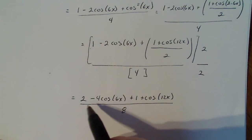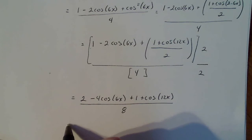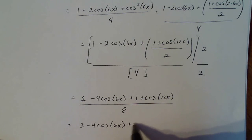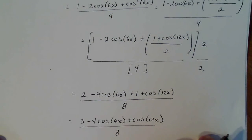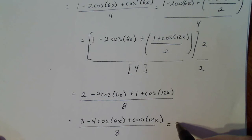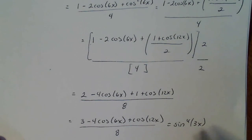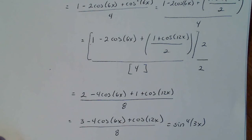Now, the only thing I can simplify in the numerator is the 2 plus 1. So I have 3 minus 4 cosine 6x plus cosine 12x, all divided by 8. And that's the same thing as sine to the fourth of 3x. I've reduced something that has the power to the fourth to everything that has the power to the first. And that's a very powerful tool.